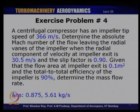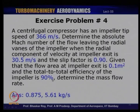Exercise Problem 4: A centrifugal compressor has impeller tip speed 366 m/s. Determine the absolute Mach number leaving the radial vanes when radial velocity at exit is 30.5 m/s and slip factor is 0.9. Given flow area at impeller exit of 0.1 m² and total-to-total efficiency of 90%, also determine mass flow rate. Answers: absolute Mach number = 0.875, mass flow rate = 5.61 kg/s. These four exercise problems consolidate the discussion from the last three lectures including radial flow turbines in coming lectures.